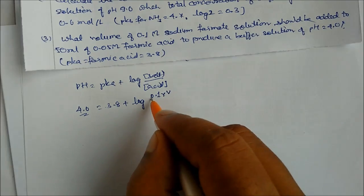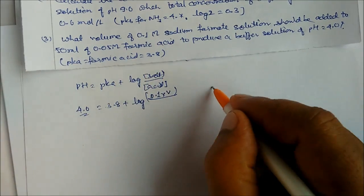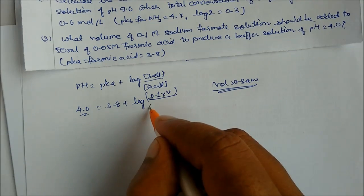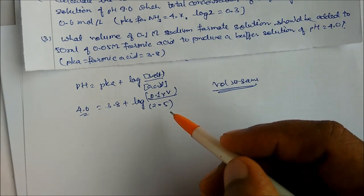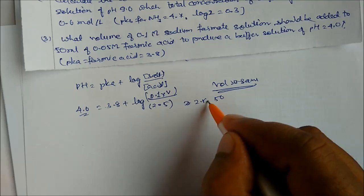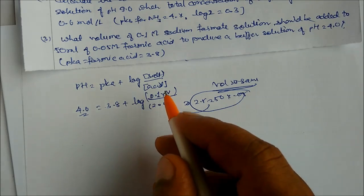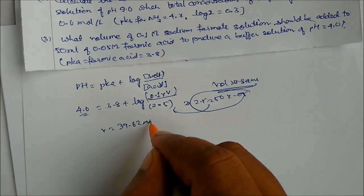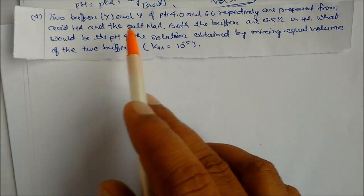pH = 4, pKa = 3.8. Salt is 0.1 molarity sodium formate, volume V. Moles of acid = 50 × 0.05 = 2.5. Since volumes cancel in the log ratio, we substitute and solve: V = 39.62 mL. This is the volume of sodium formate solution to be added.